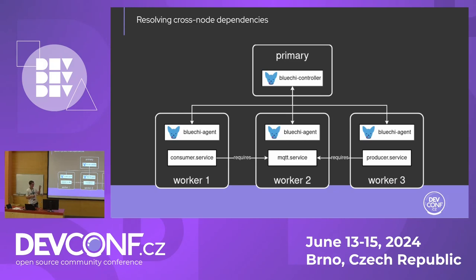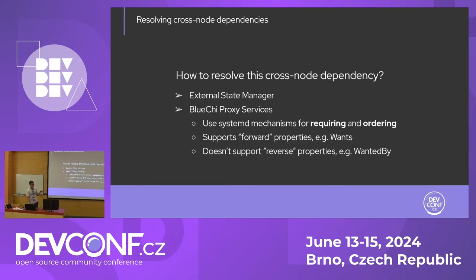I've mentioned cross-node dependencies before — let's have a look at an example. We have three worker nodes: on worker one we want to run a consumer service, on worker three a producer service, and both communicate via an MQTT broker which is the MQTT service on worker two. So both require this service. The question is how can we make sure the MQTT service is running whenever we want to start one of these other services? One option is to use an external state manager. The other option is to use BlueG's built-in feature we call proxy service, which allows you to use existing systemd mechanisms for expressing these dependencies like using Wants or Requires. We can also order these dependencies with Before and After.